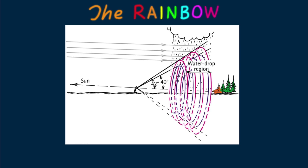For a rainbow to be seen, the sun must be shining in one part of the sky, and water drops in a cloud or in falling rain must be present in the opposite part of the sky. When we turn our backs toward the sun, we see the spectrum of colors in a bow. Seen from an airplane near midday, the bow forms a complete circle, with the shadow of the airplane in the center. All rainbows would be completely round if the ground were not in the way.